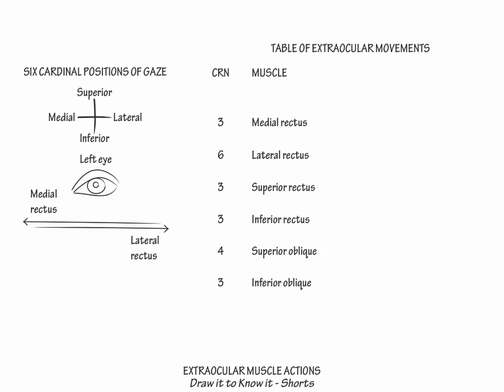Then show that when the eye is abducted, the superior rectus directs the eye superiorly and the inferior rectus directs the eye inferiorly. Next, show that when the eye is adducted, the superior oblique directs the eye inferiorly and the inferior oblique directs the eye superiorly.